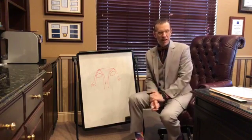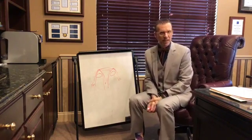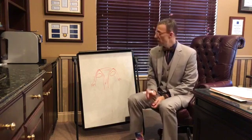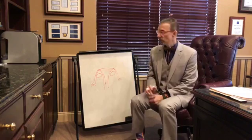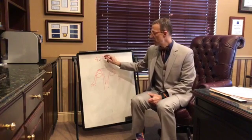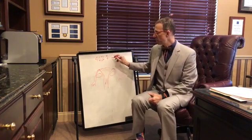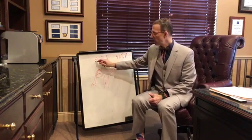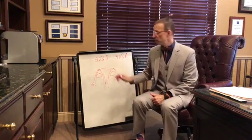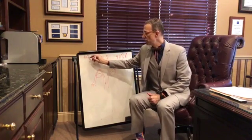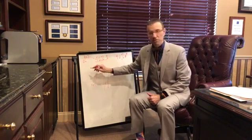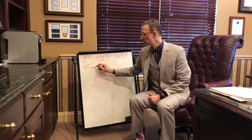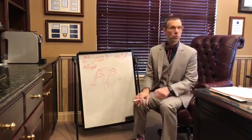Today we'd talk about something that is rather common in the infertility world. The basics of infertility: 40% of the time there's a female problem and 40% of the time there's a male problem. Of those 40% of female issues, 40% is due to ovulation disorders and 40% are due to tubal problems. So let's talk about tubal problems.